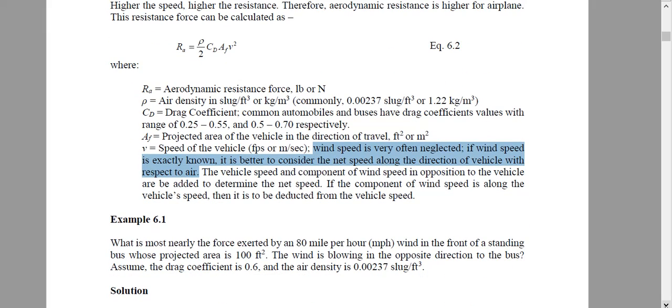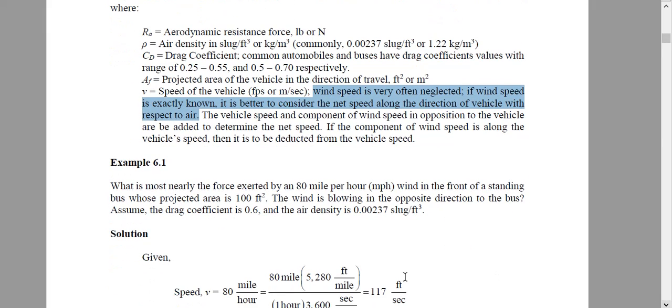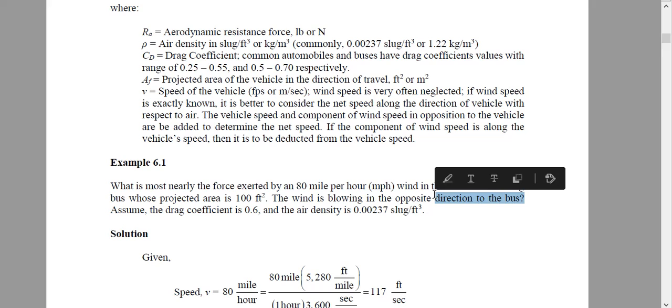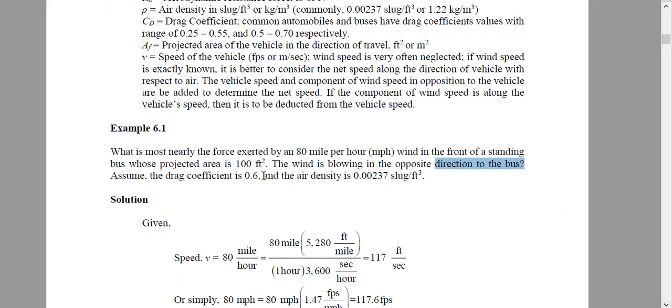We will see one example here. What is most nearly the force exerted by an 80 mile per hour wind in front of a standing bus whose projected area is 100 feet square? The wind is blowing in opposite direction to the bus. That means the bus is standing, the wind is coming toward the bus so it will resist. Assume drag coefficient 0.6 and air density is given.